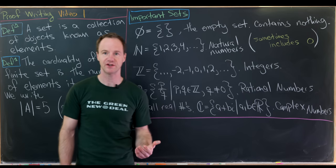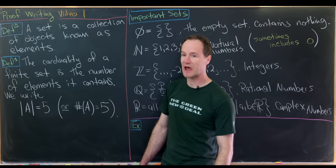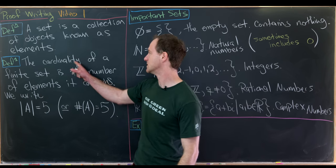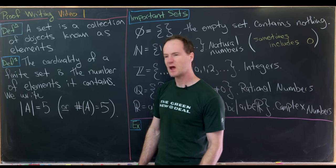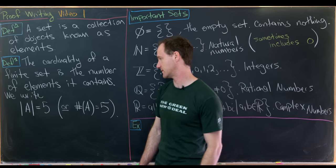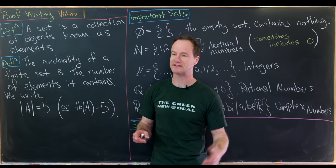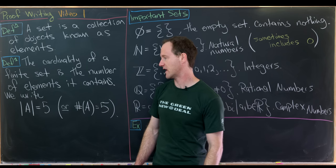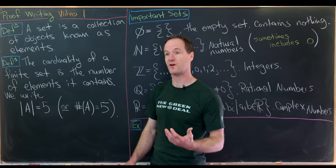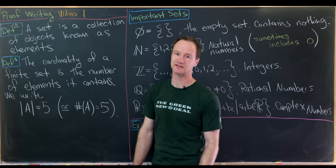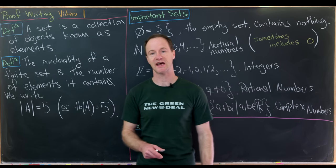Moving on to finite sets: there's a natural notion of the number of elements in a finite set, and we call that the cardinality. The cardinality of a finite set is the number of elements it contains. If A is a set with 5 elements, we write |A| = 5 and read that as 'the cardinality of A is 5.' Some textbooks use the number symbol # as a function acting on the set A giving you the number of elements.